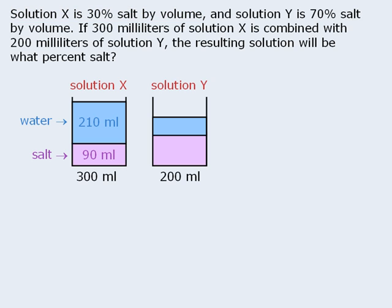Next, we have 200 milliliters of solution Y, which we will also draw with the salt and water separated. The question tells us that solution Y is 70% salt by volume. So if there is 200 milliliters of solution Y and 70% of 200 is 140, then we know that there is 140 milliliters of salt in the solution. This means the remaining 60 milliliters of the solution must be water.